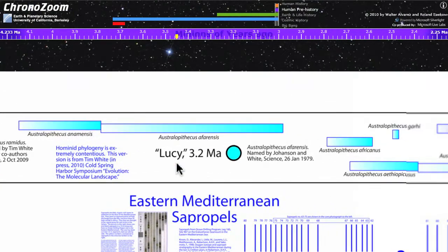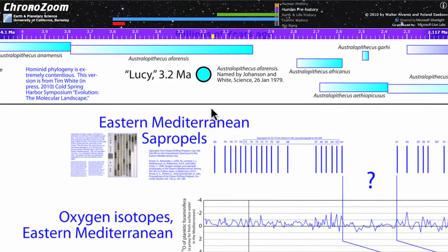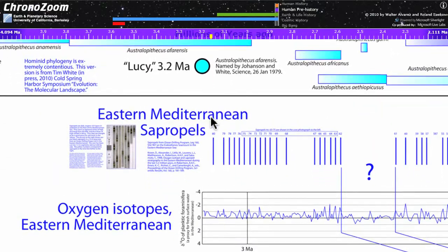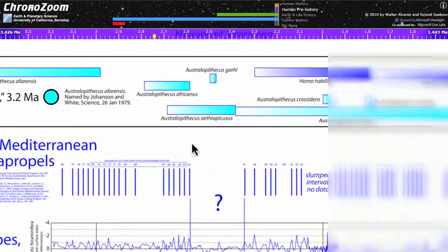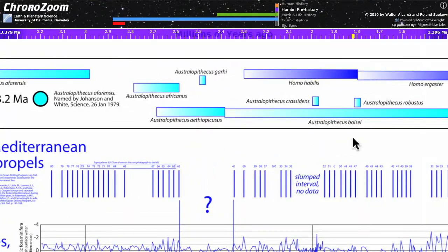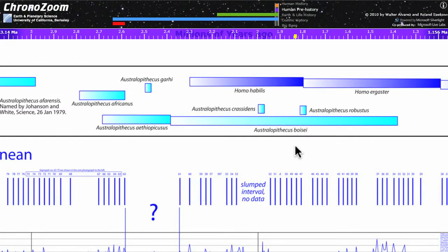Much better known to the right is Lucy, who is Australopithecus afarensis, who lived 3.2 million years ago in Ethiopia. Then to the right you can see Tim White's interpretation of the different species of humans, the genus Homo.